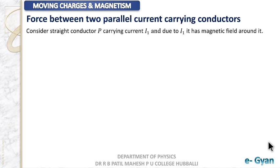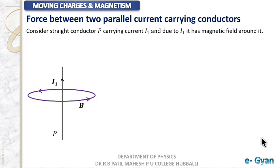To understand force between two parallel current carrying conductors, let us have an illustration. Consider a straight conductor P carrying I1 current. Due to that I1 current it will have a magnetic field around it as shown. At this point the magnetic field is into the plane of the paper, and the value is B1 = μ₀I1 / 2πr, from the magnetic field due to an infinitely long current carrying conductor.